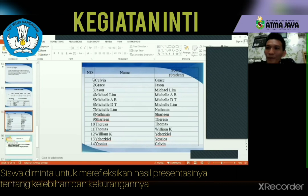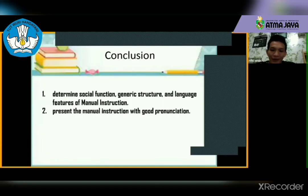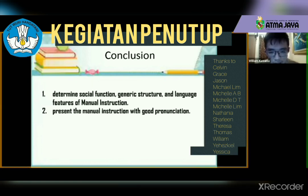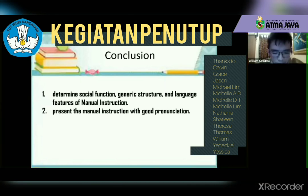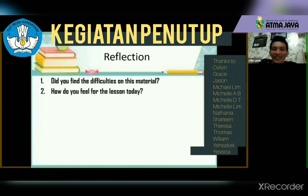And Michael, have you put the score for Jason's performance? The completion for this lesson is that we learned a lot about manual instructions — the social function, the general structure, language features, and how to do something in the proper way. How do you feel about the lessons today?